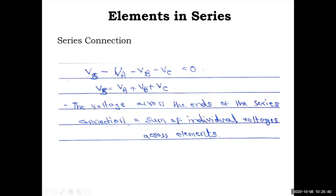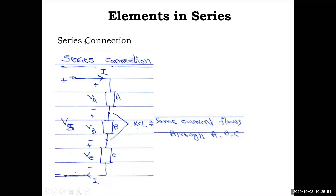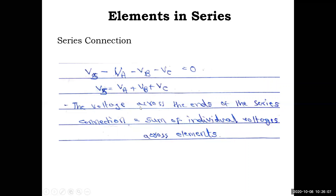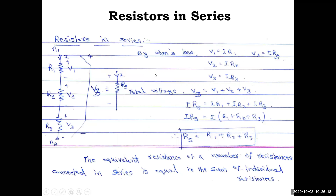Applying Kirchhoff's Voltage Law: Vs = Va + Vb + Vc. All elements share the same polarity convention — plus-minus across each — and the sum of individual voltages equals the total supplied voltage. So the total voltage across the ends of a series connection equals the sum of individual voltages across each element.